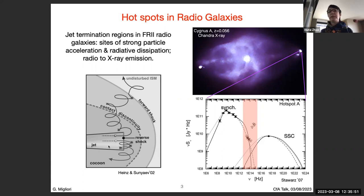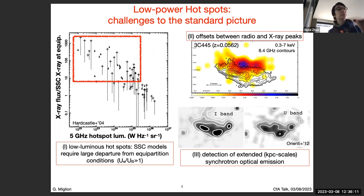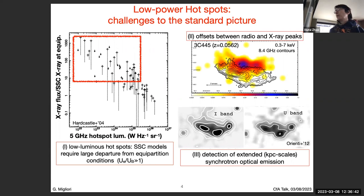The X-rays in this work by collaborators were reproduced via synchrotron self-Compton under the condition of energy equipartition between particles and the magnetic field. This simple picture is challenged when we extend our study to low-power hotspots. On the left is a plot of radio luminosity versus X-ray luminosity — specifically the ratio between the observed X-ray luminosity and the expected one in the case of synchrotron self-Compton emission under equipartition. Low-luminosity hotspots are over-luminous with respect to synchrotron self-Compton.